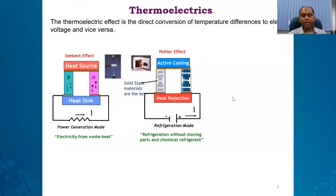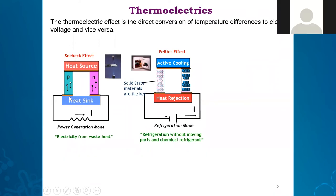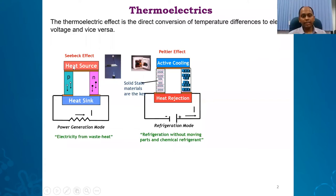In the Seebeck effect, when we have a temperature difference — a heat source and a heat sink, basically a hot end and cold end — solid semiconductors such as P and N type, when connected in electrical series but thermal parallel, can generate electric voltage.